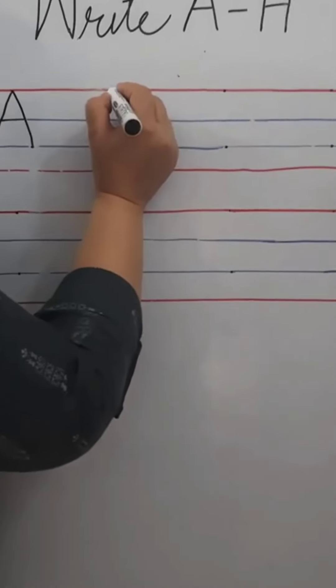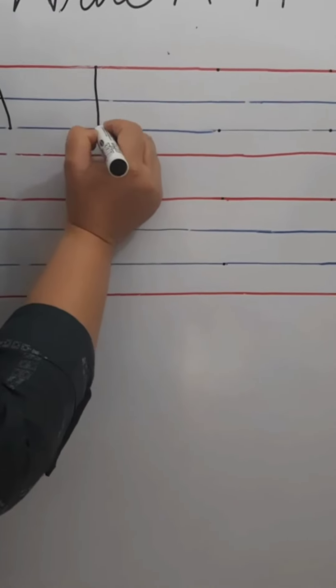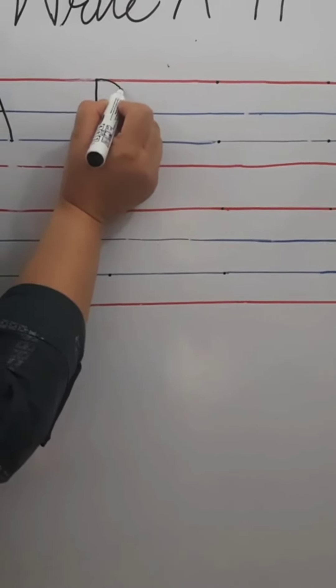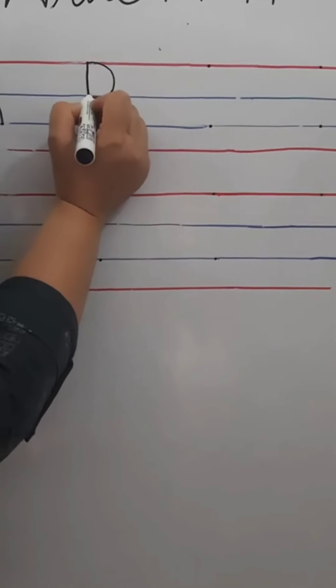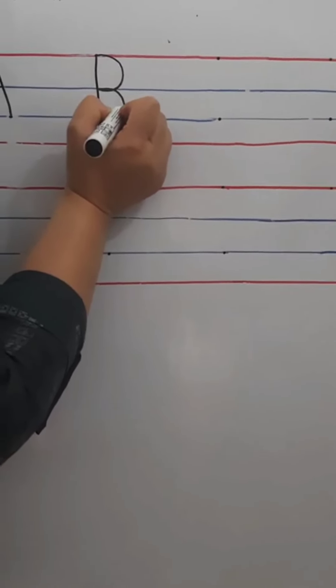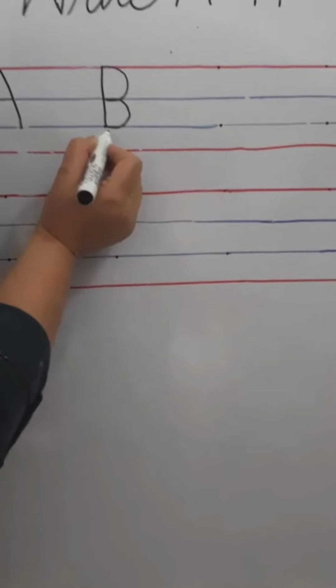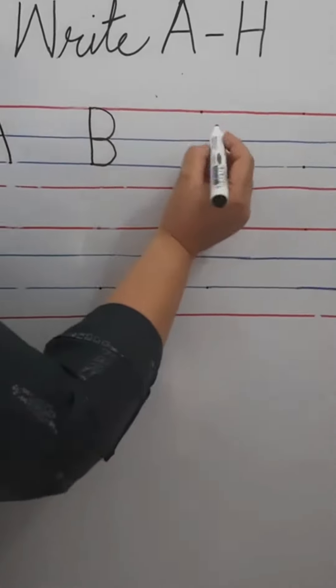Now, B, standing line. From red line to first blue line, make a curve. Again a curve. And join with the standing line. This is letter B.